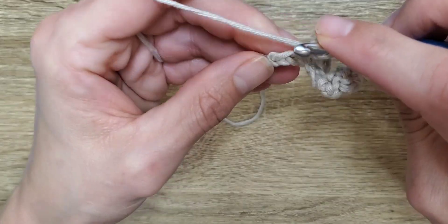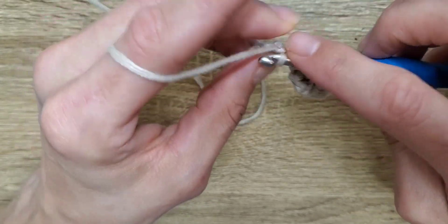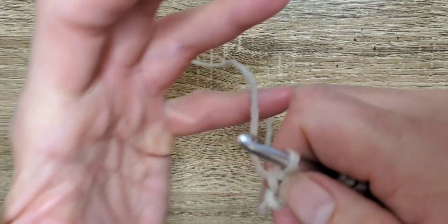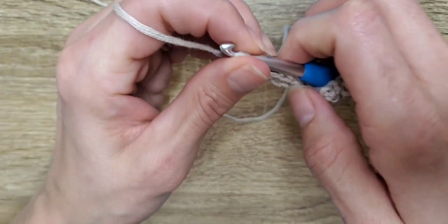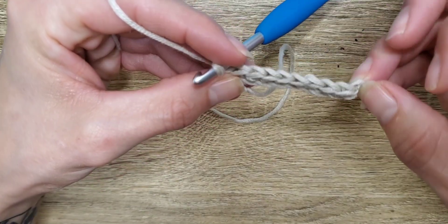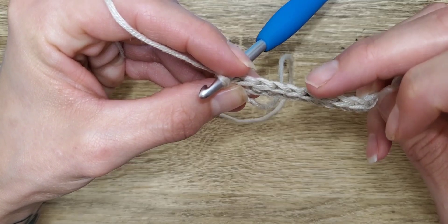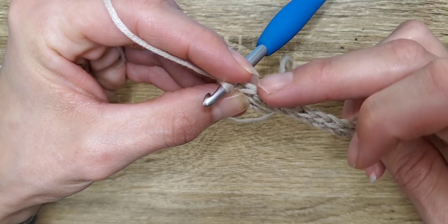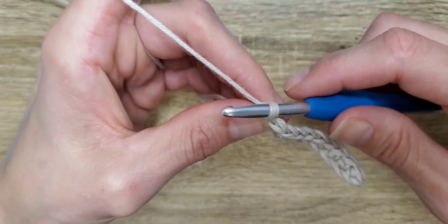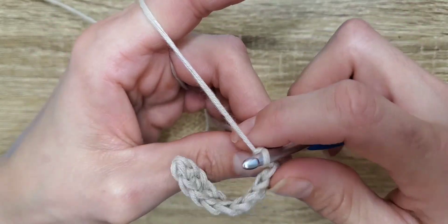So, we're here to the end. The last V. And I'm going to tighten the tail up a little bit. And I'm going to show you what it looks like. So, here are those ten chains. We've got one, two, three, four, five, six, seven, eight, nine, ten. Now, we are going to chain one for height. And we're going to turn our work again.